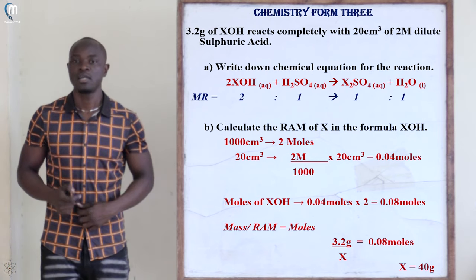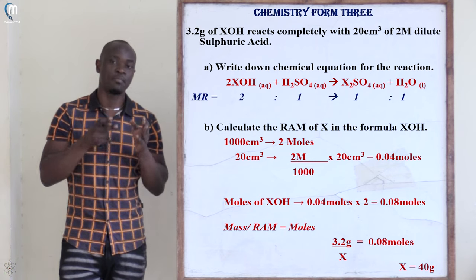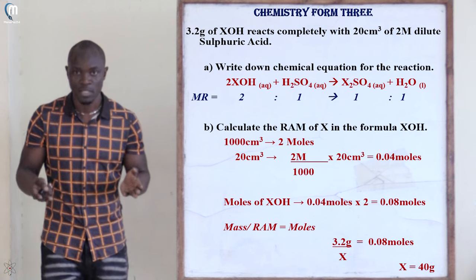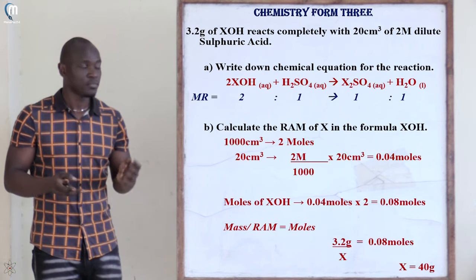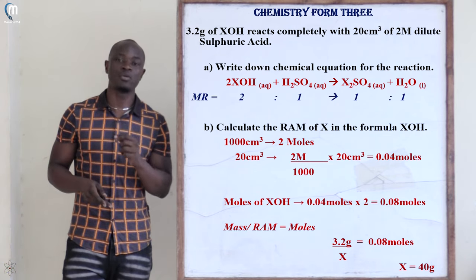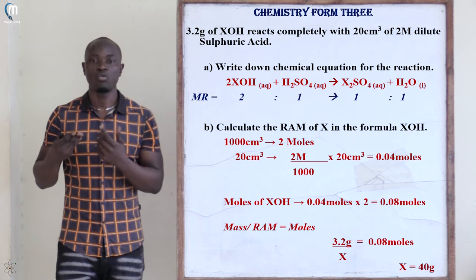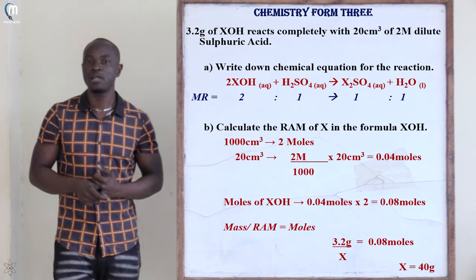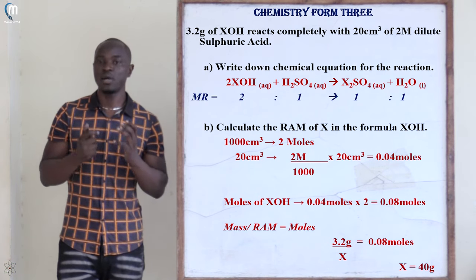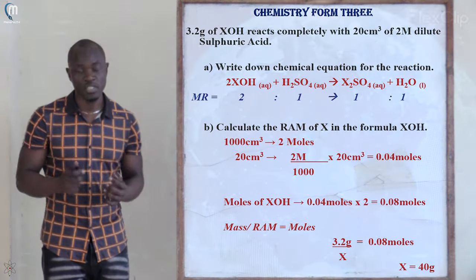Element X has a mass of 23, which corresponds to sodium in the periodic table. Therefore X is sodium, and the unknown compound XOH is sodium hydroxide (NaOH), whose relative molecular mass is 40 grams — confirming our calculation.